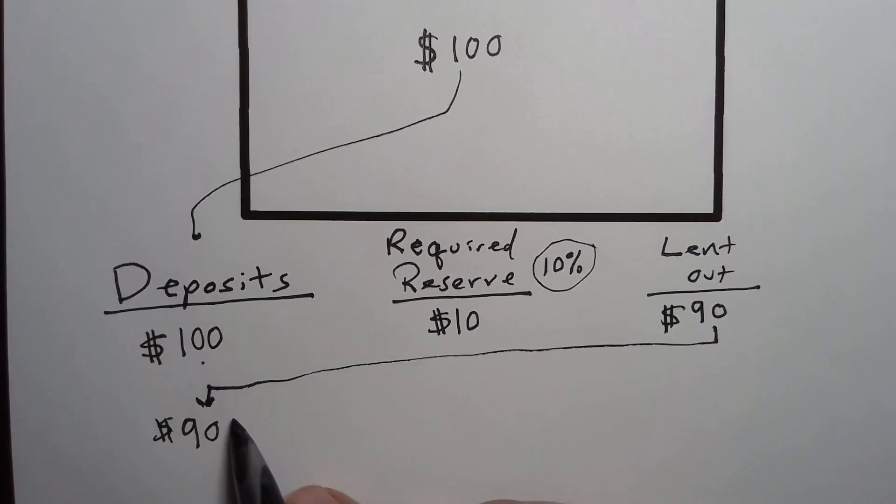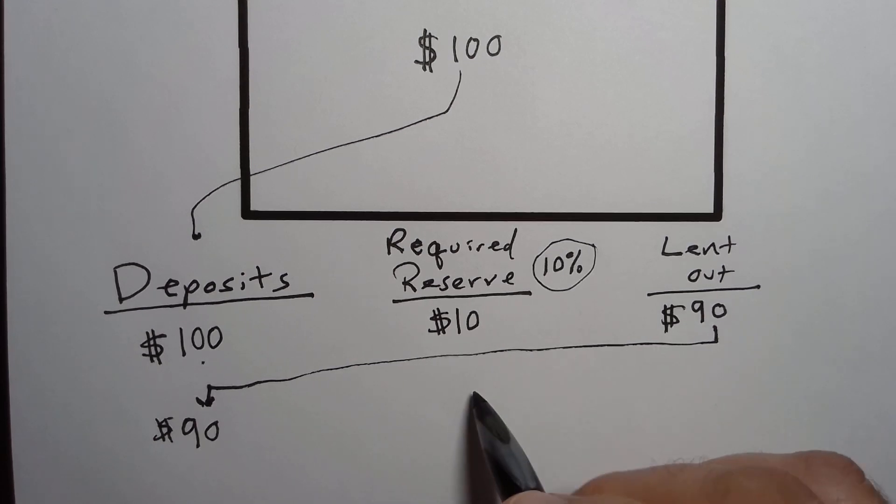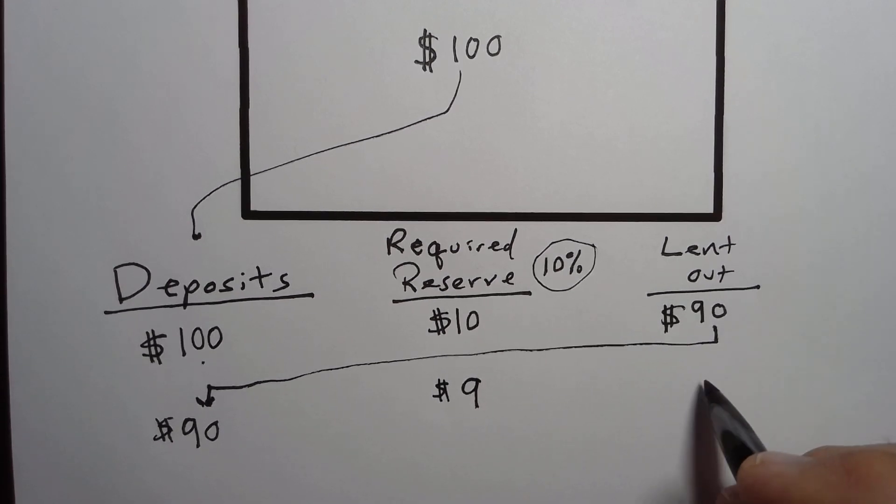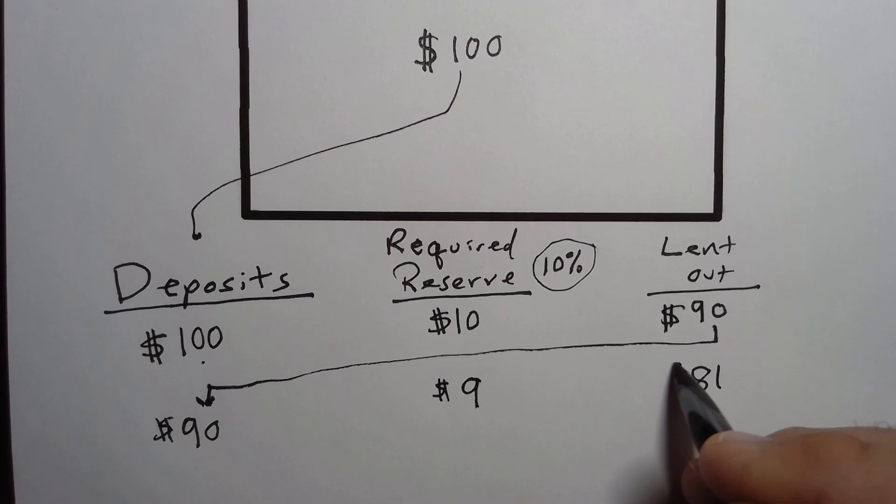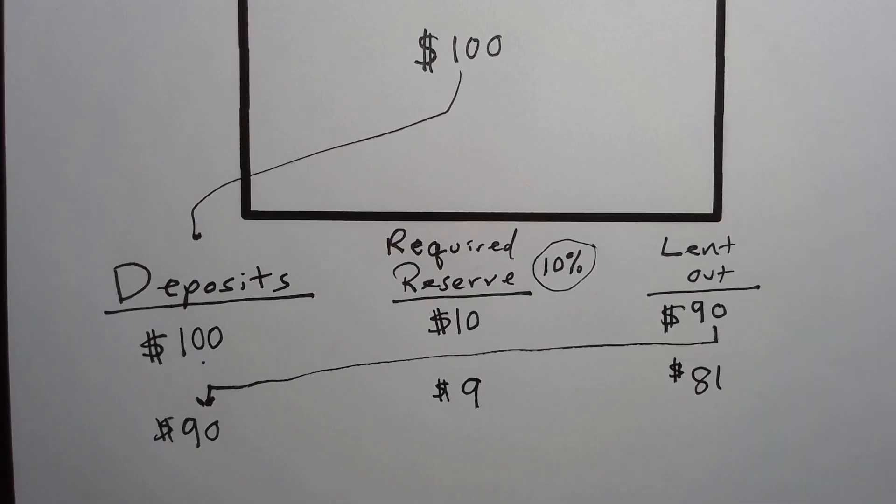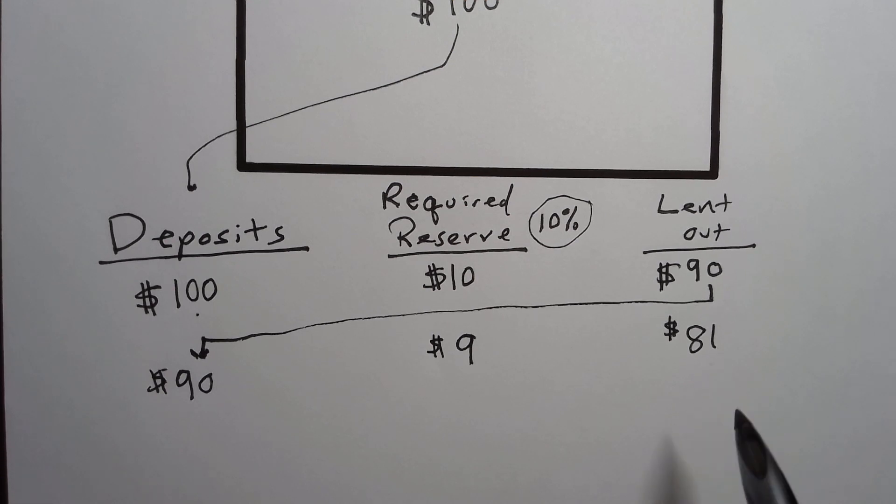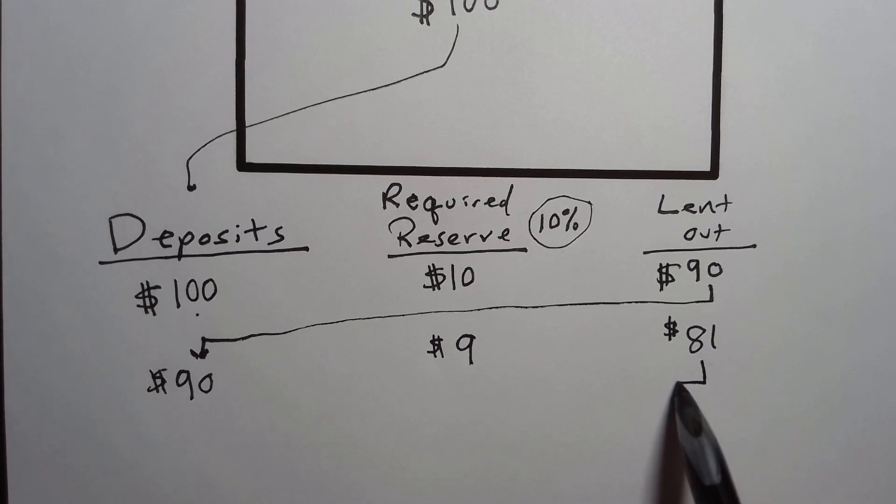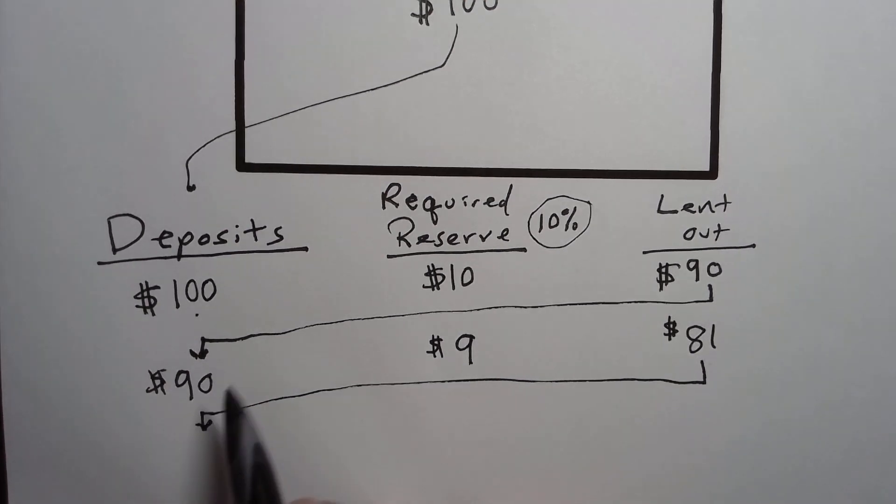Well, just as before, they're required to reserve only 10% of that. So that means they're going to keep on hand $9 and they're going to lend out the remaining $81. That $81 is lent out earning interest. Whoever they lent it to then pays it to somebody who then comes back to the same bank and deposits it.